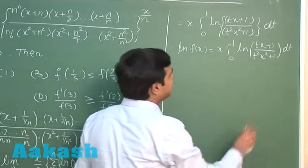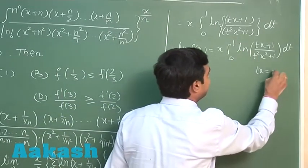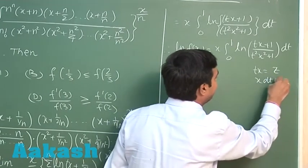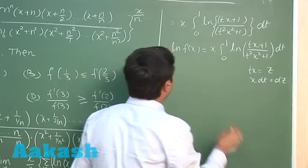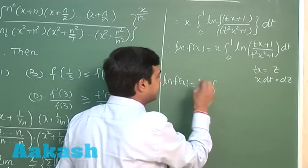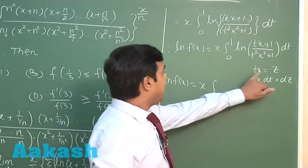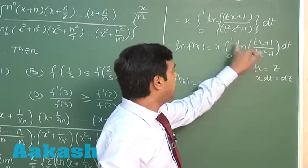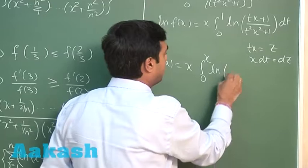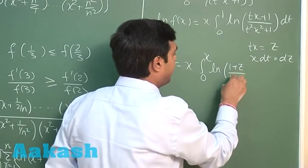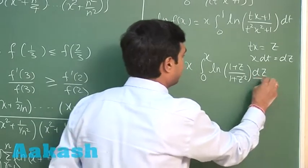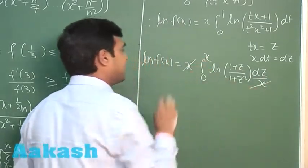To simplify this integral, let tx = z, so x·dt = dz. When t = 0, z = 0; when t = 1, z = x. Hence log f(x) = x · ∫₀ˣ log[(1 + z)/(1 + z²)] · dz/x. The x cancels, giving log f(x) = ∫₀ˣ log[(1 + z)/(1 + z²)] dz.